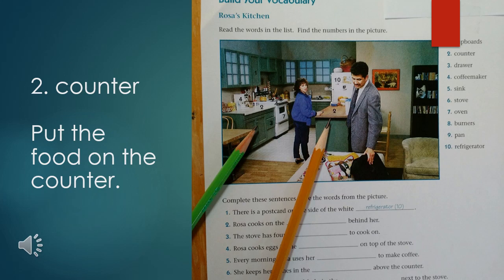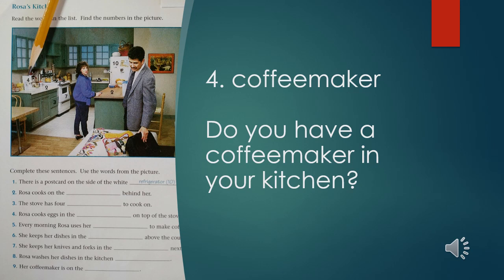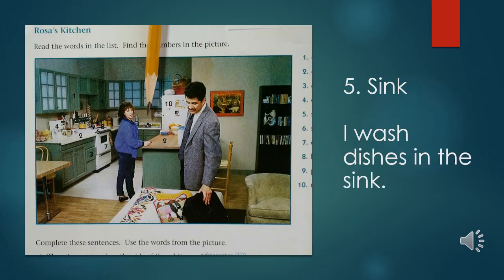Number two: counter. Put the food on the counter. Number three: drawer. The dishcloths and towels are in this drawer. Number four: coffee maker. Do you have a coffee maker in your kitchen? Number five: sink. I wash dishes in the sink.